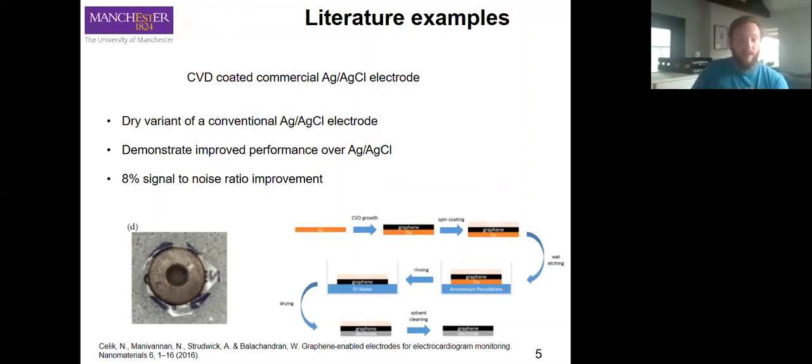The CVD is grown on copper, it's then removed by etching later on, and it leaves graphene by the end step supported entirely on this silver silver chloride. It demonstrates improved performance over a traditional silver silver chloride electrode and an eight percent improvement in the signal to noise ratio.